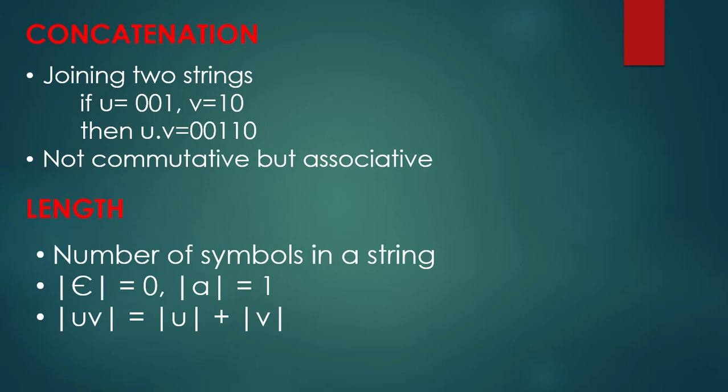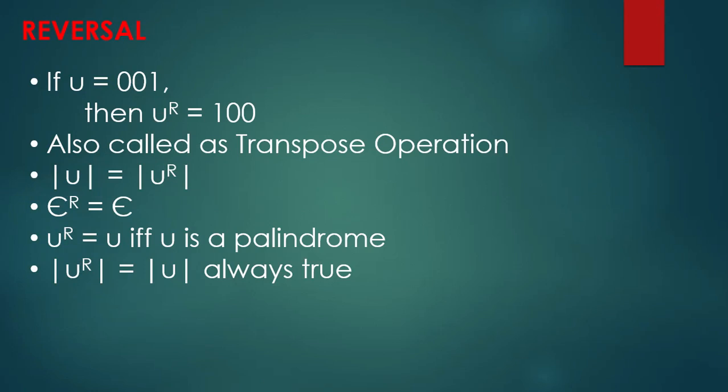The next terminology is length. Length is the number of symbols in a string. For example, the null string has length 0. A single symbol string has length 1. For example, 'a' has length 1.